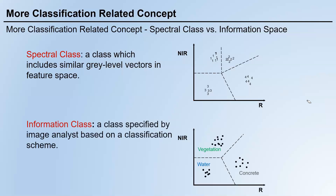We also have information class, which is the type of class we usually discuss in remote sensing. Here, it's still near-infrared and red band, but this time we give each class a specific name from the real world. An information class is a class specified by image analysts, meaning human knowledge has been added into the classification. So those spectral classes are no longer just numbers — they become vegetation, water, concrete, and so on.